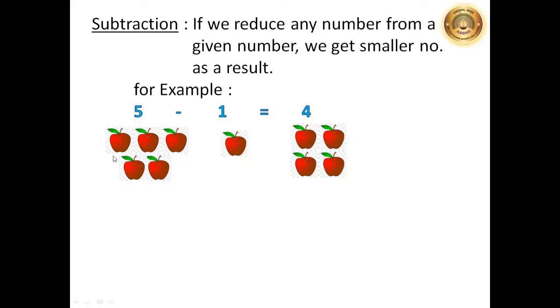Here is the explanation. We have 5 apples. 1, 2, 3, 4, 5. And we will reduce 1 apple from this 5. As a result, now we have 4 apples here. 1, 2, 3 and 4.